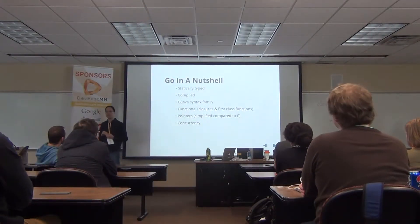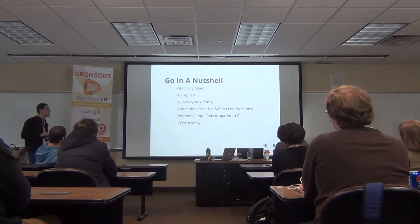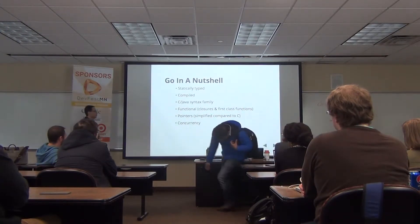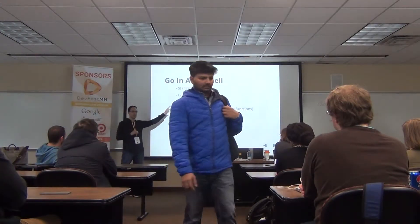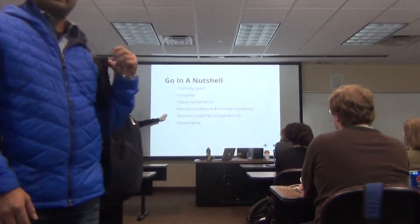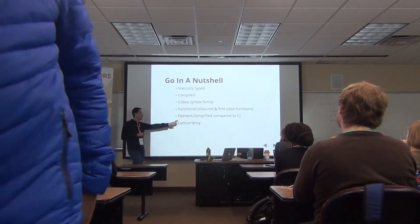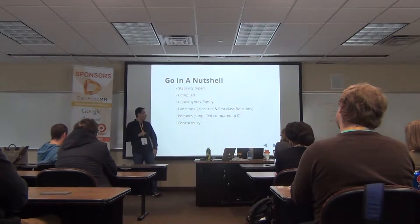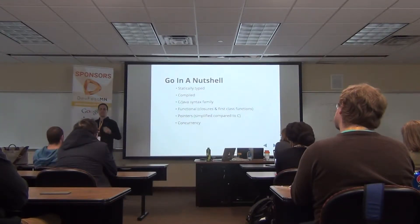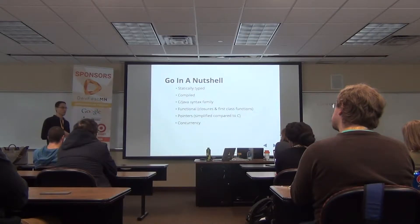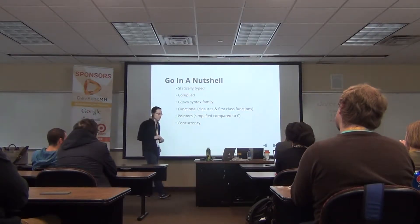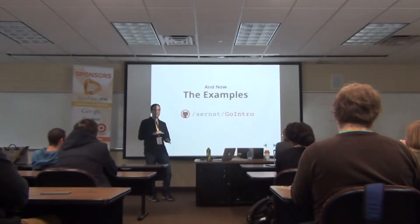Go in a nutshell: it is a statically typed language, it is compiled, it's in the C/Java syntax family — you're going to see brackets and a lot of things that look familiar. It has functional capabilities including closures and first-class functions as variables. It does have pointers, which scares a lot of people, but they are very simplified compared to C — they do not suck nearly as much. One of the big things is it has concurrency primitives — things called goroutines — which make concurrent, simultaneous programming much easier.